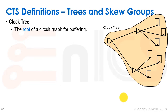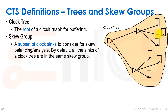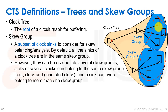A clock tree in Cadence tools is defined as the root of a circuit graph for buffering — everything downstream from this root that drives clock sinks is the clock tree. A skew group is a separate entity — a subset of clock sinks considered for skew balancing or analysis. By default all sinks of a clock tree are in the same skew group. However, you can divide sinks into different skew groups; for example, one set of sinks forms one skew group and another set forms a different skew group, even though they may belong to the same clock tree.